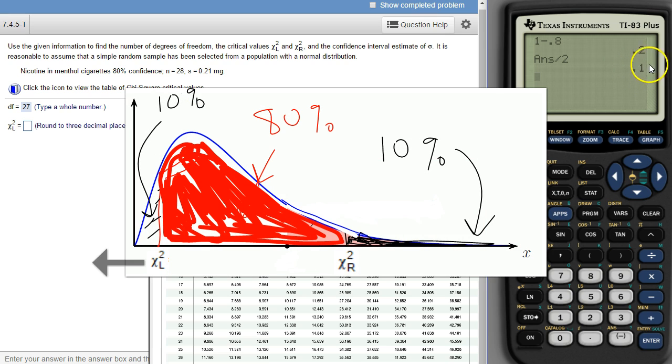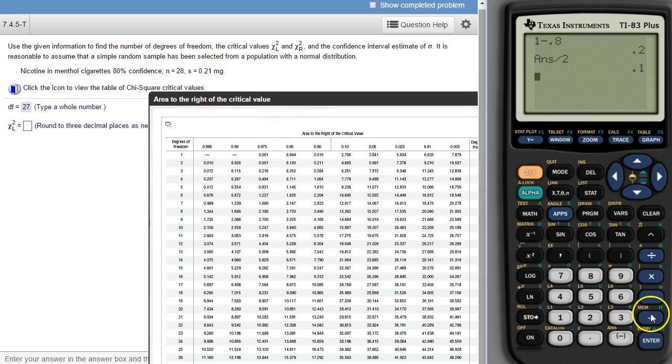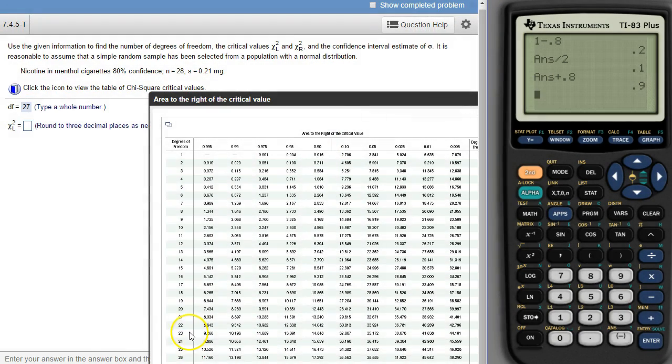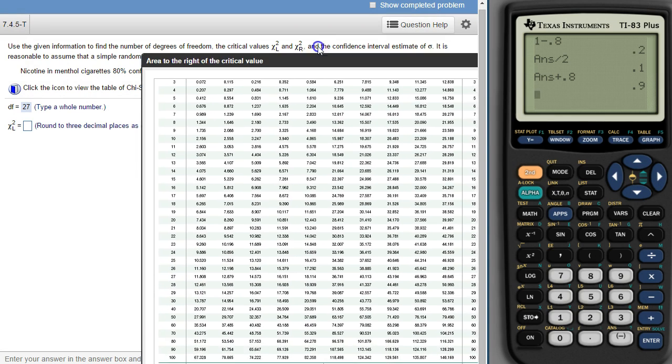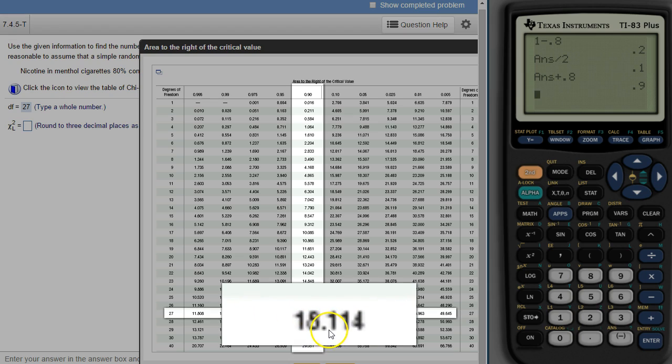The area to the left is 10 percent, but 80 percent is in between the two, so we got 80 percent plus 10 percent to the right of the lower number. So this is to the right, so we have that plus 0.8, so that's 90 percent is to the right. So we look for 90 percent, there it is. Our degrees of freedom is 27, so there's 27. There's 90, there's 27, they meet right there at 18.114.